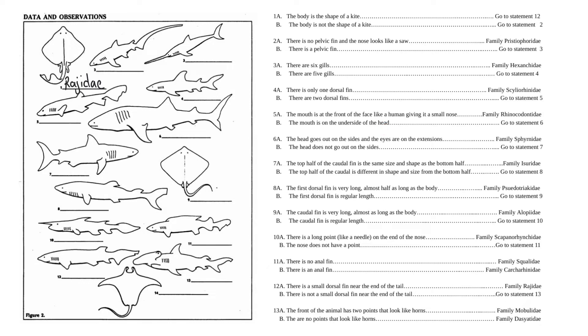Well, this one's mouth is on the underside. You can see this shark here has the mouth on the front of the face. So we go to statement 6. The head goes out on the sides, and the eyes are on the extensions, or the head does not go out on the sides. Well, B is true. Go to statement 7. The top half of the caudal fin, which is the tail, is the same size and shape as the bottom half, or the top half is different size and shape. This one is definitely different size. So we go to statement 8.